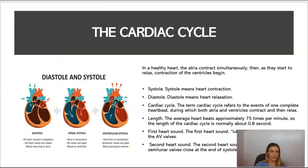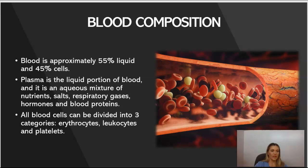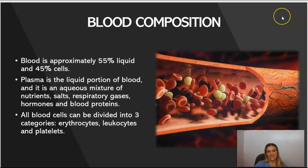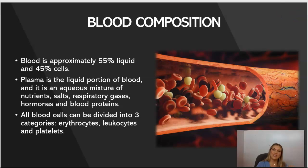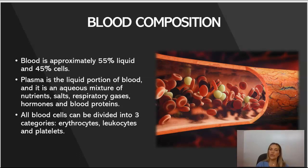The last component of the cardiovascular system is blood. Blood composition is approximately 55% liquid and 45% cells. Plasma is the liquid portion of blood and is a mixture of nutrients, salts, respiratory gases, hormones, and blood proteins. All blood cells can be divided into three categories: erythrocytes, leukocytes, and platelets.